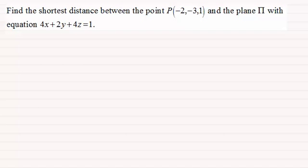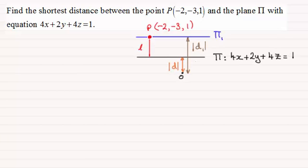Okay so let's see how you got on if you had a go. Well first of all I'd encourage you to draw a sketch of what's going on. It's not necessarily an accurate sketch but what I've got here is the plane π with the Cartesian equation 4x + 2y + 4z = 1 and the point P with coordinates (-2, -3, 1).